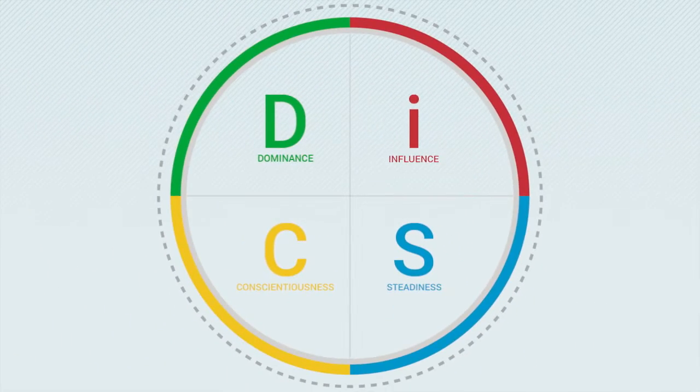This is DISC, your decoder. It gives you a way to quickly understand the needs and priorities of the people around you. It describes four basic styles: D, I, S, and C.